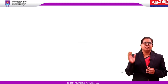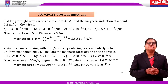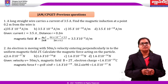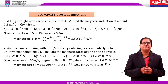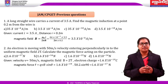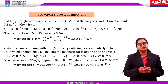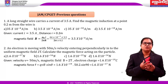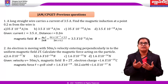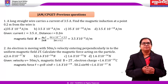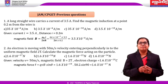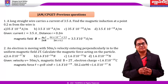I have given some problems here along with the solutions. First question: A long straight wire carries a current of 3.5 amperes. Find the magnetic induction at a point 0.2 meters from the wire. Given data: current I equals 3.5 amperes, distance r equals 0.2 meters. The formula is B equals μ₀I / 2πr — as studied in Biot-Savart's law. By substituting all the values, where μ₀ equals 4π × 10⁻⁷, I equals 3.5, r equals 0.2, we can get the magnetic field equal to 3.5 × 10⁻⁶ Tesla.